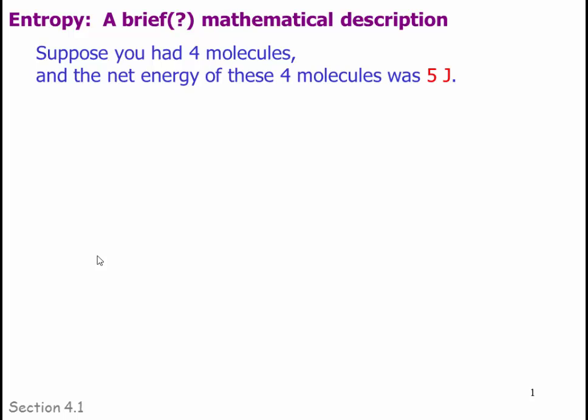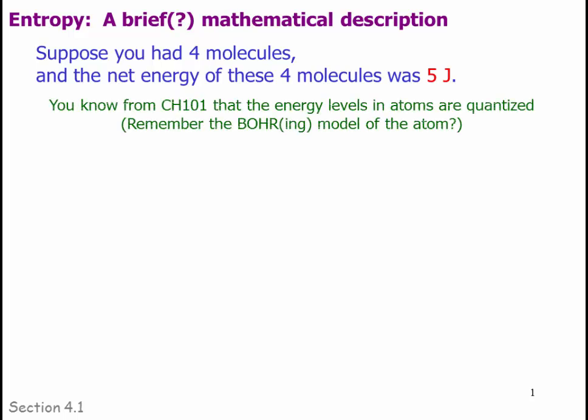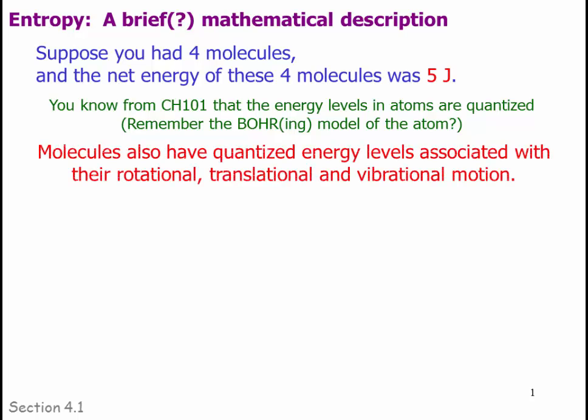The entropy of a system can actually be described mathematically. Suppose you had a very small system of 4 molecules, and the net energy of these 4 molecules was 5 joules. You know from Chem 101 that the energy levels in atoms are quantized. Molecules also have quantized energy levels associated with their rotational, translational, and vibrational motion.